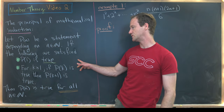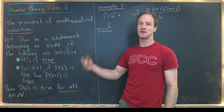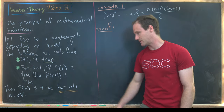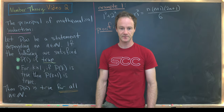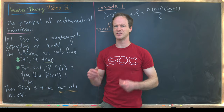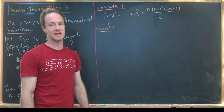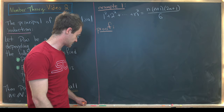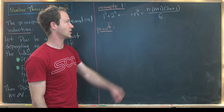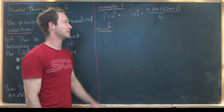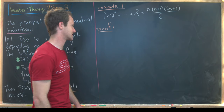If these two things are true for some statement depending on natural numbers, then that statement is always true — in other words, it holds for all natural numbers. Now we're going to look at a bunch of examples. The first is the sum of the first n squares: 1 squared plus 2 squared plus 3 squared all the way up to n squared equals n times n plus 1 times 2n plus 1 over 6.